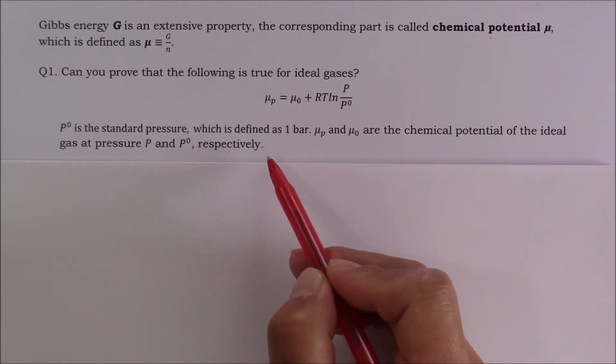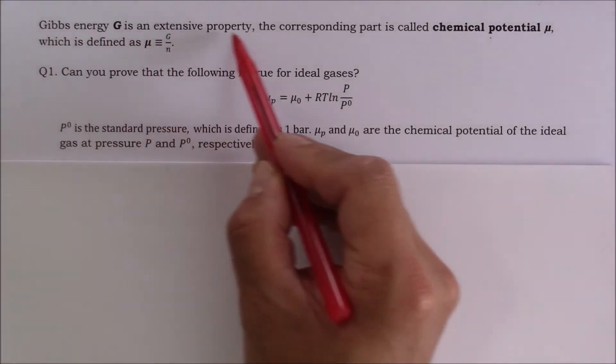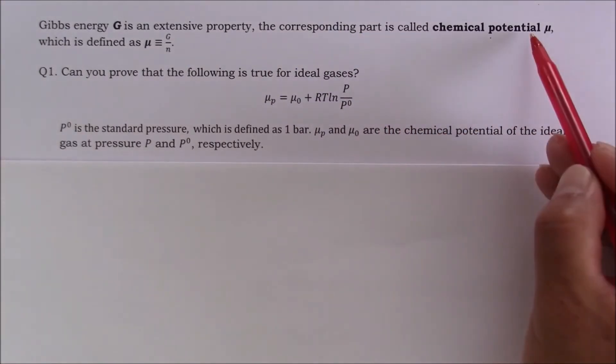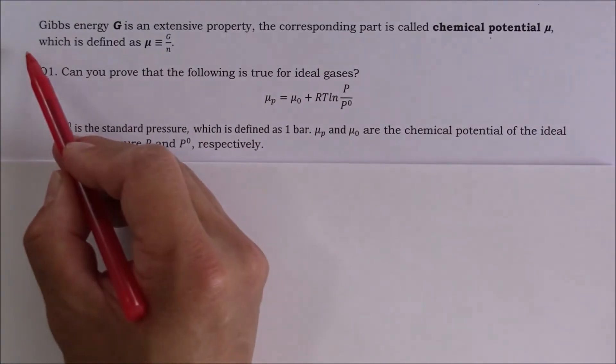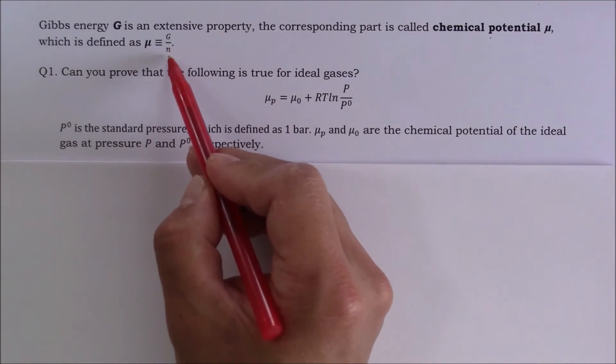First, let's review the concept of chemical potential. As we know, Gibbs energy G is an extensive property. The corresponding intensive property of G is called chemical potential μ, which is defined as μ equals G over N.